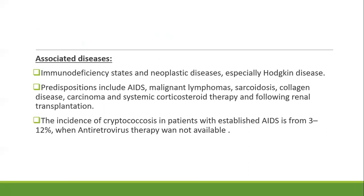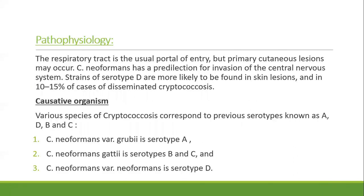Associated predispositions include AIDS, malignant lymphomas, Hodgkin disease, sarcoidosis, collagen disease, carcinoma, and systemic corticosteroid therapy following renal transplantation. The incidence of cryptococcosis in patients with established AIDS was 3 to 12 percent when antiretroviral therapy was not available. The respiratory tract is the usual portal of entry, but primary cutaneous lesions may occur. Cryptococcus neoformans has a predilection for invasion of the CNS; strains of serotype D are more likely to be found in skin lesions, accounting for 10 to 15 percent of disseminated cryptococcosis.